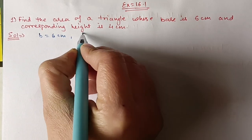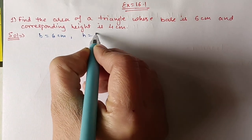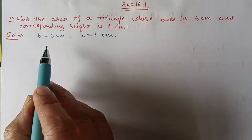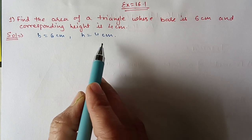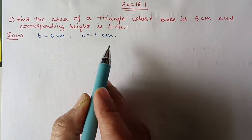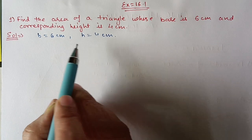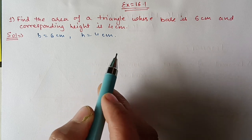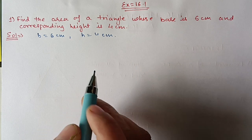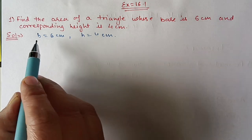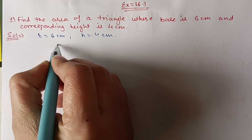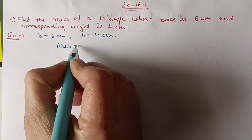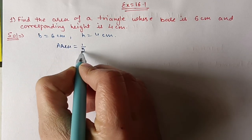First of all, check whether base and height are both in the same unit. If they are in different units, convert them to the same unit. Since base and height are given, we will use the formula: area = (1/2) × base × height.